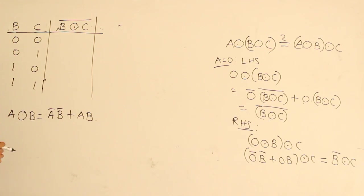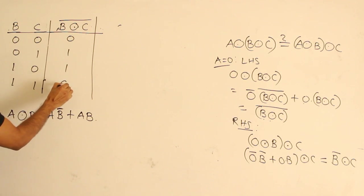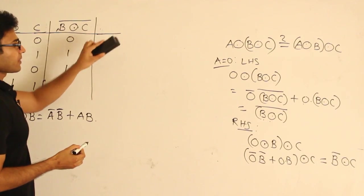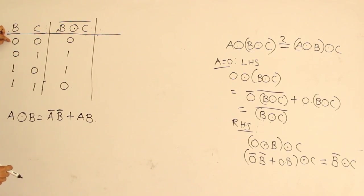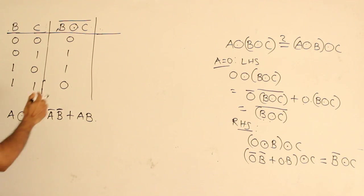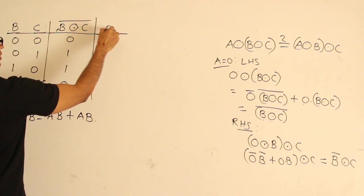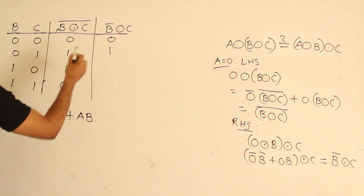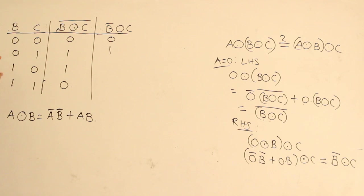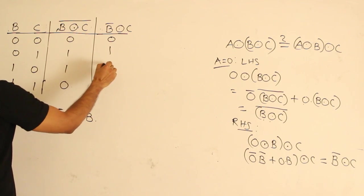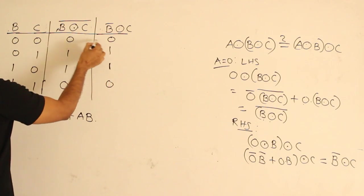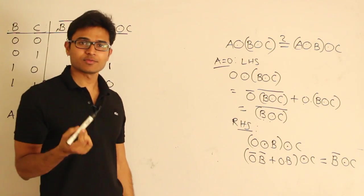Evaluating B' XNOR C through the truth table: when B=0,C=0 → B'=1, 1 XNOR 0 = 0; B=0,C=1 → B'=1, 1 XNOR 1 = 1; B=1,C=0 → B'=0, 0 XNOR 0 = 1; B=1,C=1 → B'=0, 0 XNOR 1 = 0. This gives 0,1,1,0. Comparing with (B XNOR C) complement also gives 0,1,1,0. Both are equal — so for A=0, the equation is satisfied.